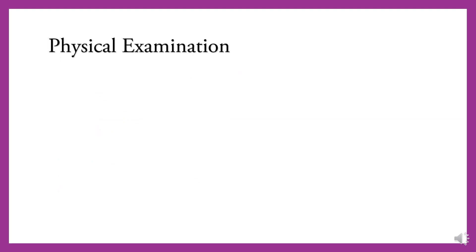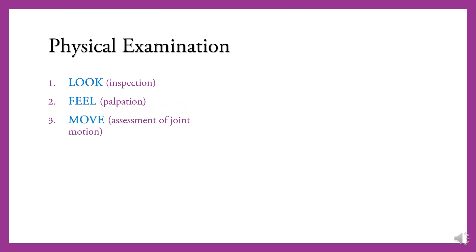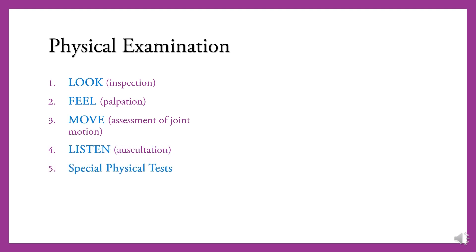Physical examination consists of six steps. First, look through inspection. Second, feel through palpation. Third, move through the assessment of joint motion. Fourth, listen from the patient. Fifth, perform special physical tests. And lastly, the neurological examination.